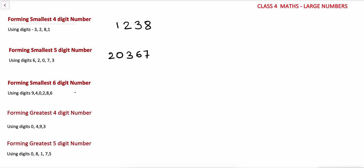To form the smallest 6-digit number using digits 9, 4, 0, 2, 8, 6 — the method is the same. Write all digits in ascending order except 0. So first we write 2, then 0, then the remaining digits in order: 4, 6, 8, 9. So the smallest 6-digit number formed is 204689.